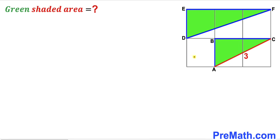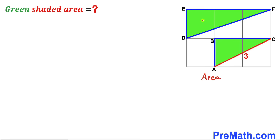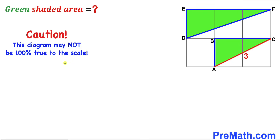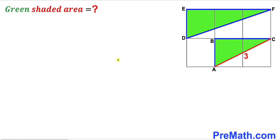Welcome to pre-math. In this video we have got two green shaded right triangles ABC and DEF in a square grid, such that the hypotenuse AC is three units. Our task is to calculate the area of this green shaded region — this area and this area combined. Please keep in mind that this figure may not be 100% true to scale. Let's go ahead and get started.